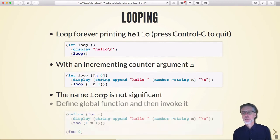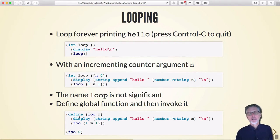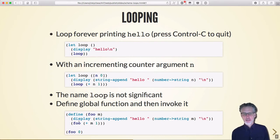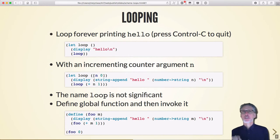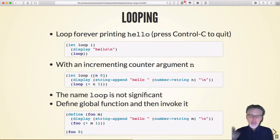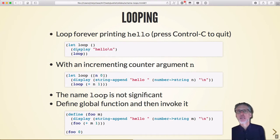The name 'loop' here is not significant — you could use anything. Here's a function that is defined recursively where I'm defining the function with one parameter and looping around, invoking it. The difference is that a loop defines something and invokes itself — I don't have to define a loop function and then invoke it. This is immediately invoked.